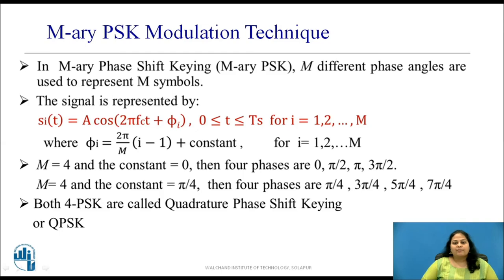Let us now discuss M-Ary PSK modulation technique. In M-Ary PSK, M different phase angles are used to represent M symbols, mostly with a phase difference of 2π/M. The M-Ary PSK signal is represented by Si(t) equals A·cos(2πfct + φi) for one symbol duration, for i equal to 1 to M. For example, for M equal to 4 and constant equal to 0, the four phases used will be 0, π/2, π, and 3π/2. For M equal to 4 and constant equal to π/4, the four phases will be π/4, 3π/4, 5π/4, and 7π/4.